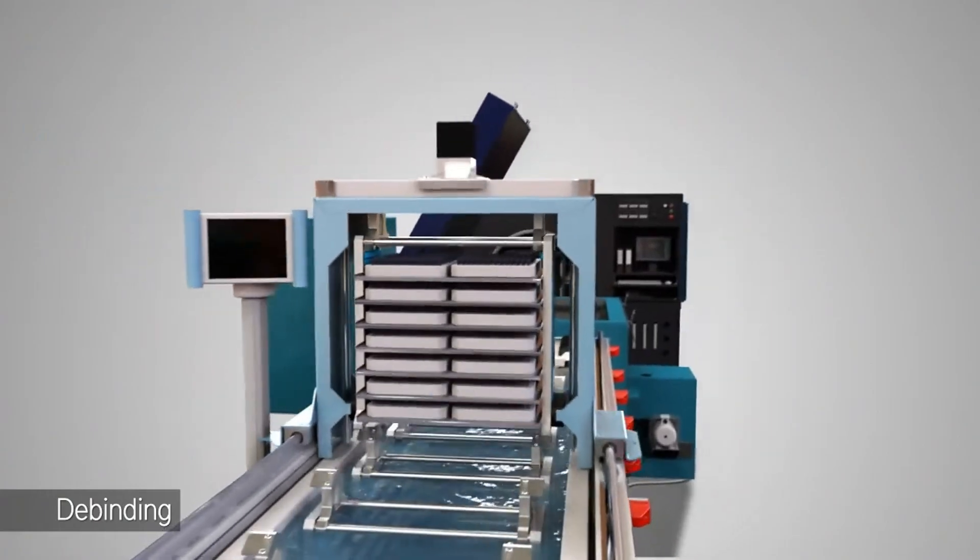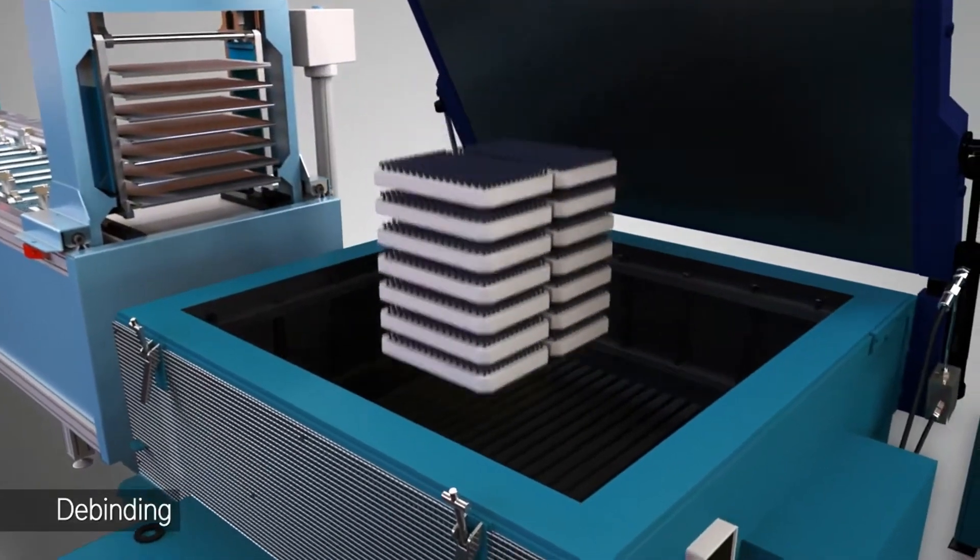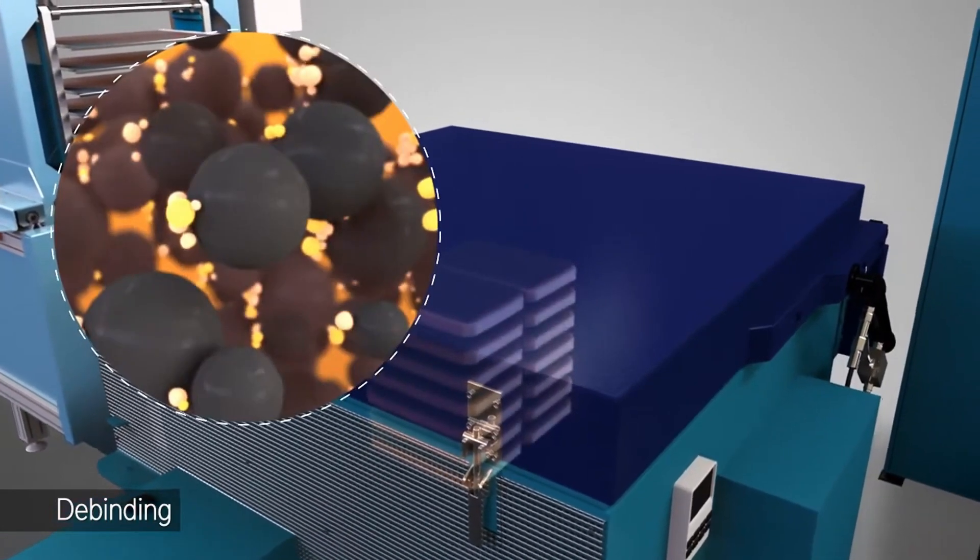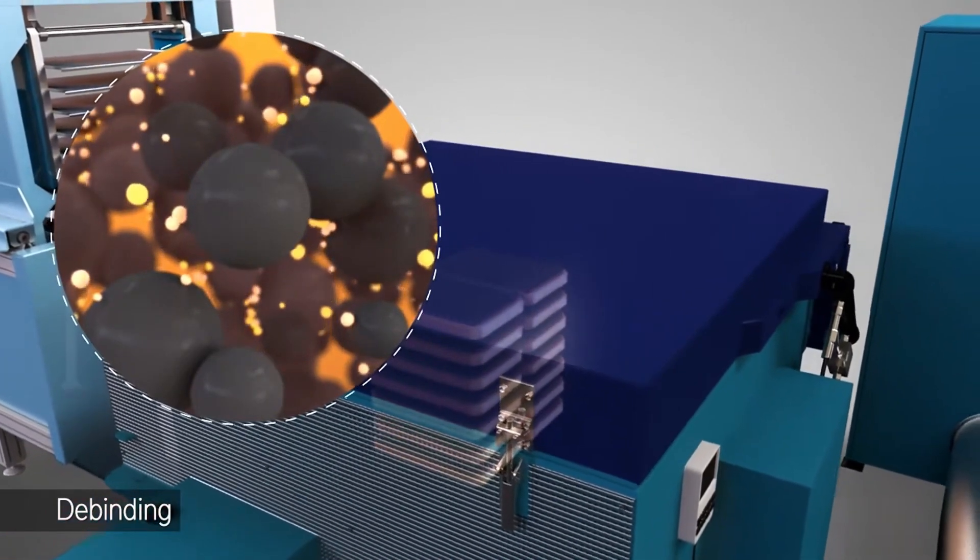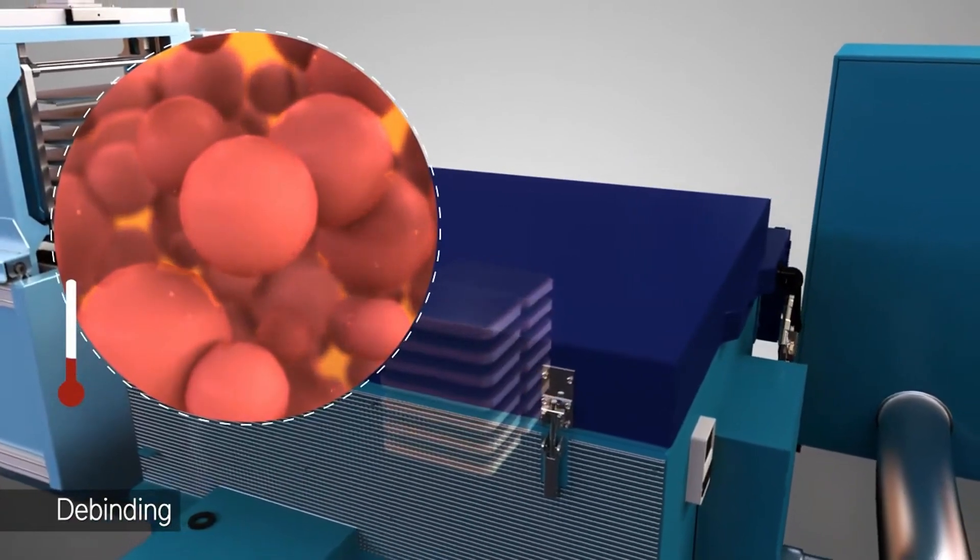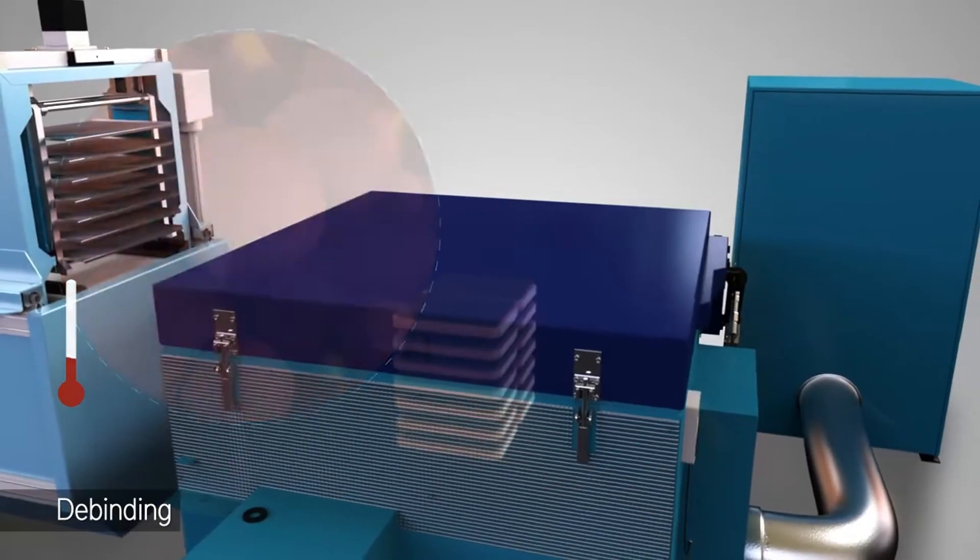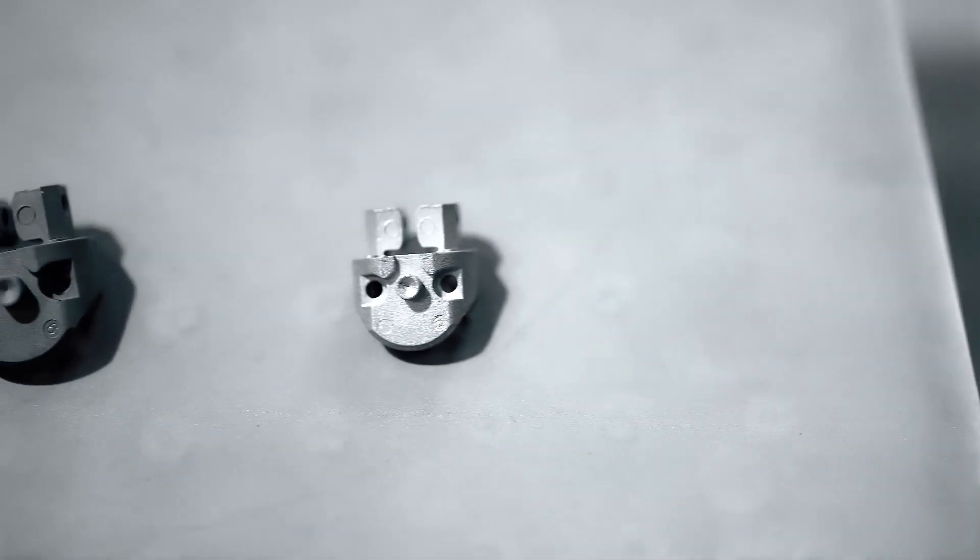The fourth step is sintering. The brown parts are evenly placed on the ceramic sheet for sintering, the temperature rises, and the metal powder melts without melting. The brown part retains its original shape in the molten state, removing the gaps between the powders and shrinking slightly to form the final part.